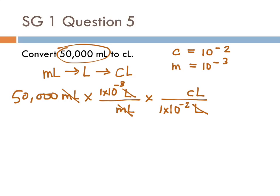So then you use your calculator: 50,000 times 1 EE minus 3, divided by 1 EE minus 2, equals. The calculator will show you 5,000, and the unit there is centiliters.